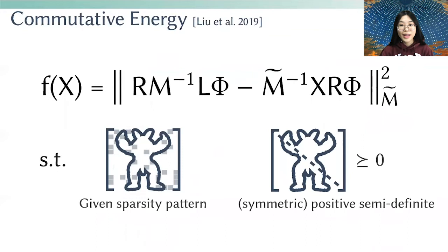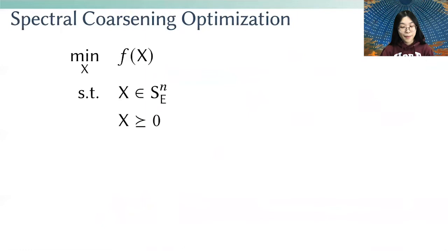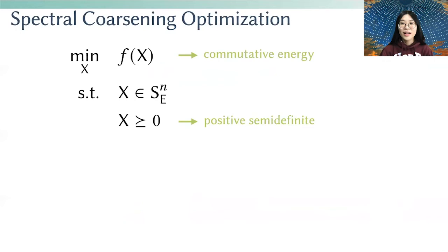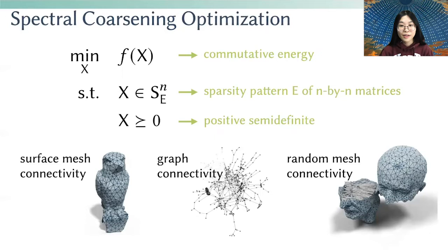If we write this as an optimization problem, we have the commutativity energy as our objective function and two constraints. One is that the coarse operator must be positive semi-definite. The other is that the coarse operator must have a specific sparsity pattern. The sparsity pattern E can be any arbitrary symmetric sparsity pattern — it can encode surface mesh connectivity, warp connectivity, or even some other random connectivity. However, it is tricky to satisfy both the PSD constraint and the sparsity constraint simultaneously.